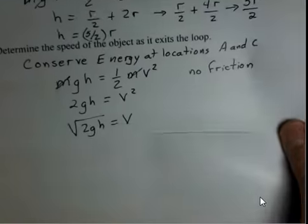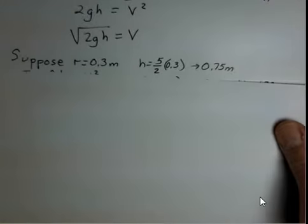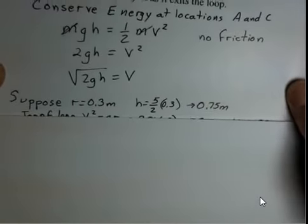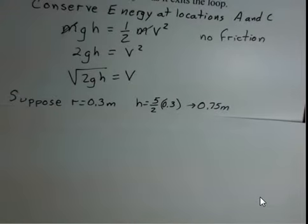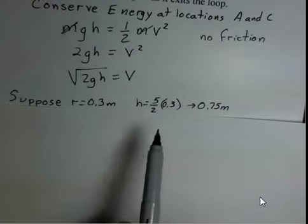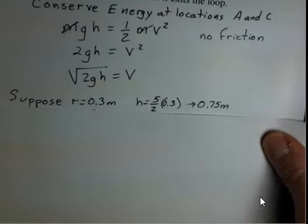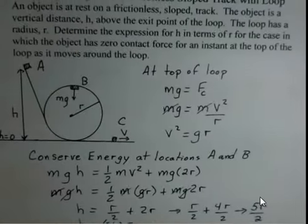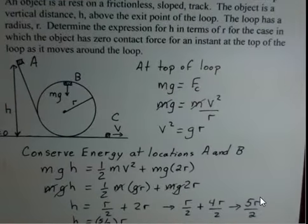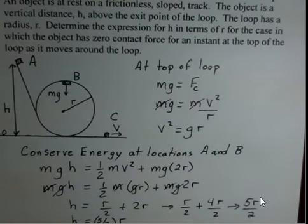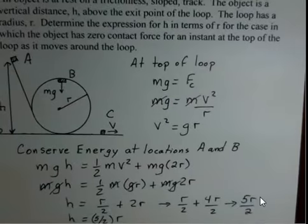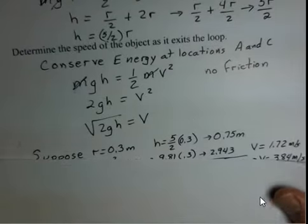Now, let's put some particular numbers to this. Nothing real big. But suppose we have a loop that has a radius of 0.3 meters. Well, the h value of where we want to start our object is 0.75 meters. Is that consistent with my drawing? If r is 0.3 meters and h is 0.75, yes, 2r would be 0.6 meters and h of 0.75, we're above point B. So that's okay with our drawing.